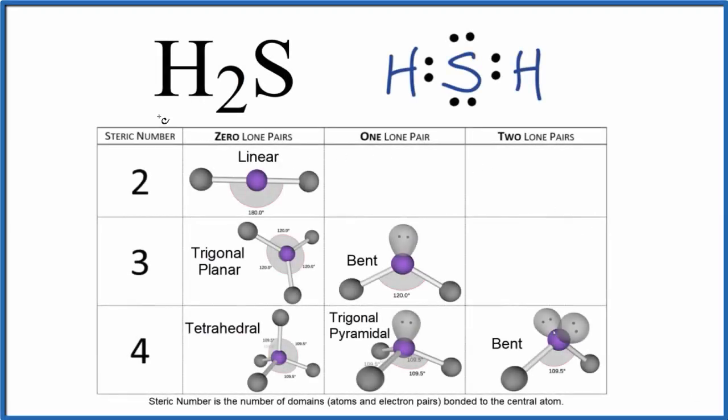Let's determine the molecular geometry for H2S. This is hydrogen sulfide. So we start out with a valid Lewis structure when we're trying to find the molecular geometry. This is the Lewis structure for H2S.